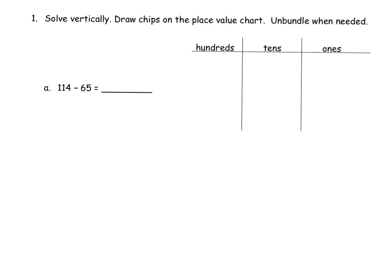So let's get started. This says to solve vertically and then record our thinking over here. Teachers, you can choose to solve vertically first and then confirm it with your place value chart, or you can do the place value chart and then confirm it with your standard algorithm, or do them step at a time together. You can read the lesson plan on Engage New York. You have a lot of flexibility here.